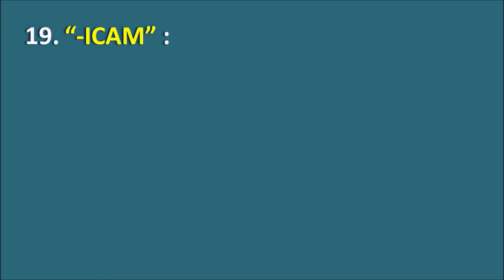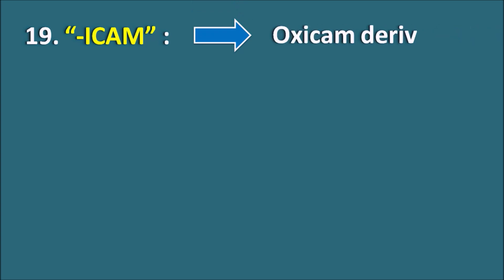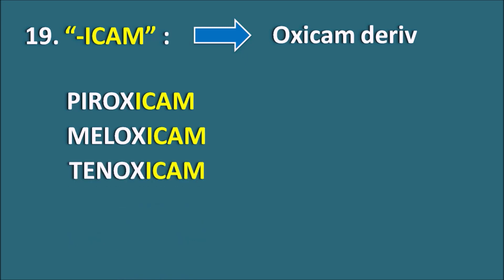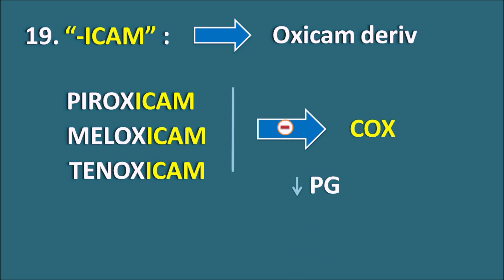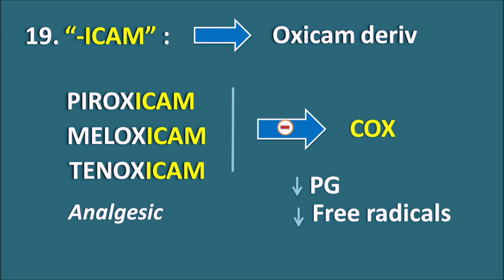The 19th suffix is ICAM. The suffix ICAM indicates they are the OxiCAM derivatives. We have drugs like Piroxicam, Meloxicam, and Tenoxicam. All these drugs are non-steroidal anti-inflammatory drugs that inhibit the COX enzyme, thereby decreasing prostaglandin synthesis. Apart from this mechanism, they can also decrease free radical production as well as leukocyte activity, producing analgesic and anti-inflammatory activities through multiple mechanisms.